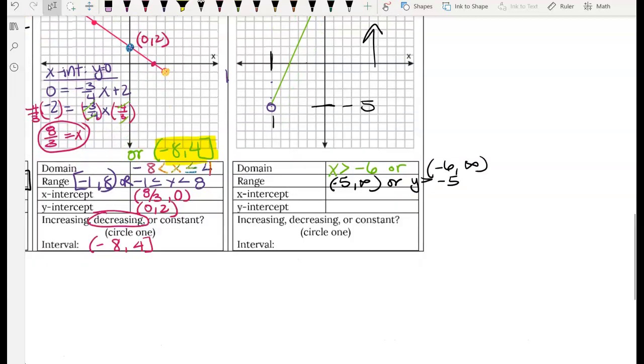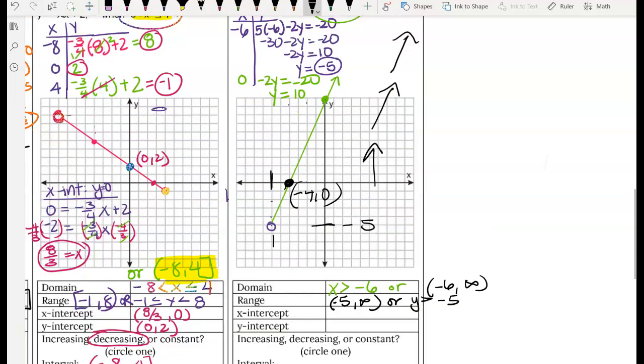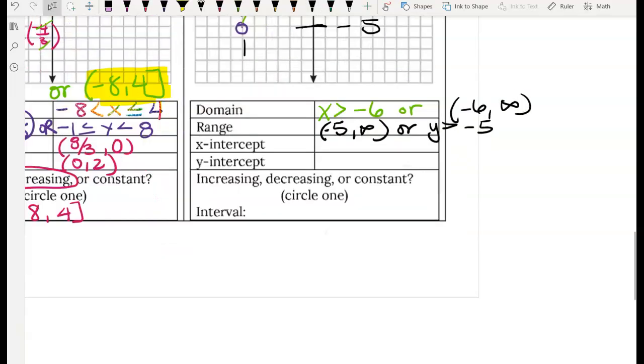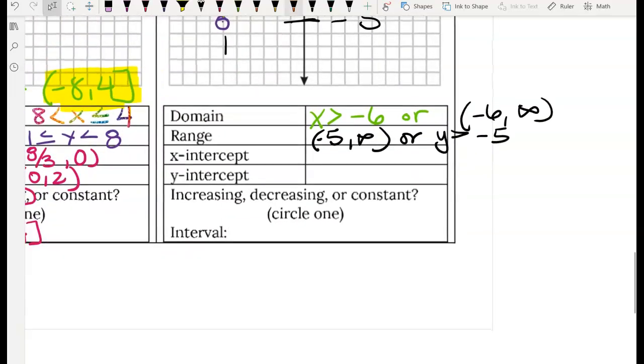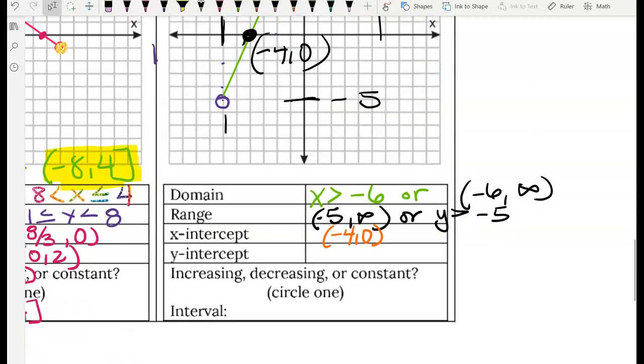X intercept, it looks like we do have one. It looks like a nice one right there. Okay, so that's 2, 4, negative 4, comma 0. No work needed since the nice value. Okay, so x intercept, order pair, negative 4, comma 0. Y intercept, that was another nice point that we found, right? 0, 10. 0, comma 10.